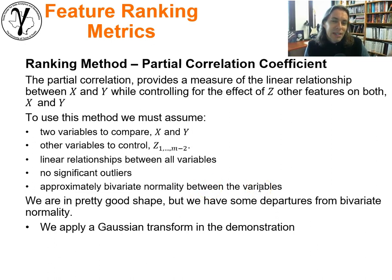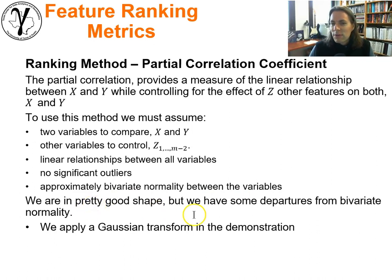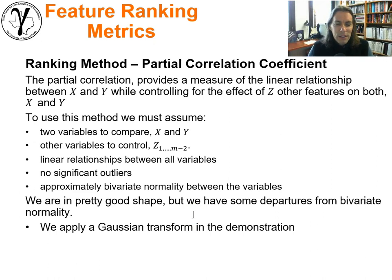That's why we did the matrix scatter plot — to check if we have something kind of reasonable around bivariate normality. We're in pretty good shape; there are no really strong departures. We'll also apply a Gaussian transformation in a univariate sense to try to improve or clean up.